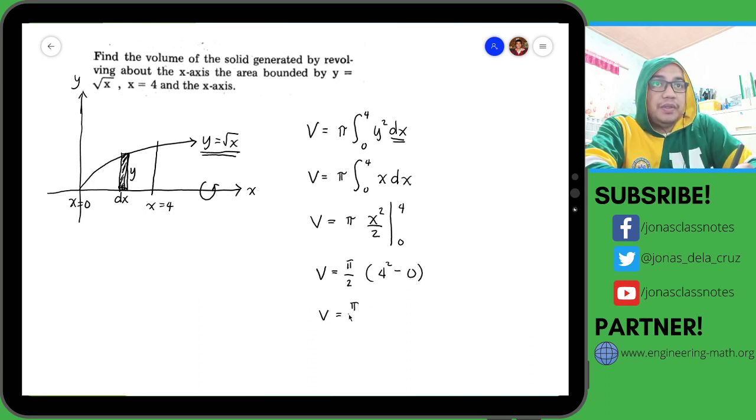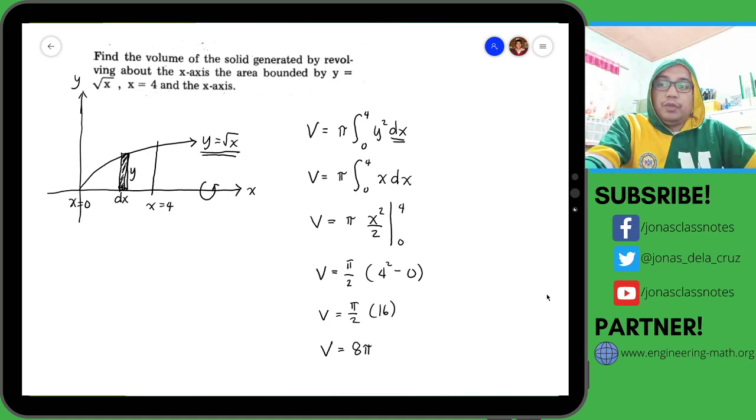π over 2 multiplied by 16. So the answer is 8π cubic units. This is actually consistent with the answer from the book.